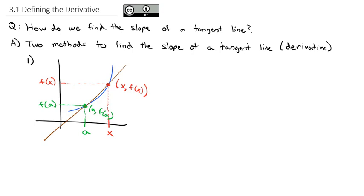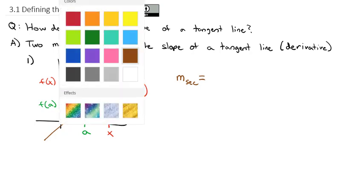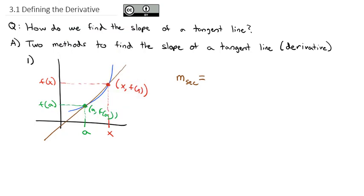The way we make that secant line — let's first talk about the secant line. What is the slope of the secant line? To get it, we use the slope formula we already know: y₂ minus y₁ divided by the difference in x's. So the slope of the secant line is f(x) minus f(a), subtracting the y's, divided by x minus a, subtracting the x coordinates.